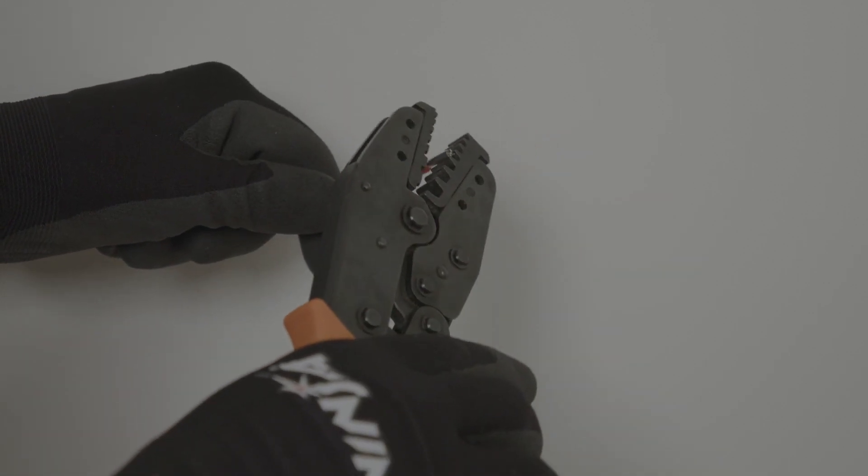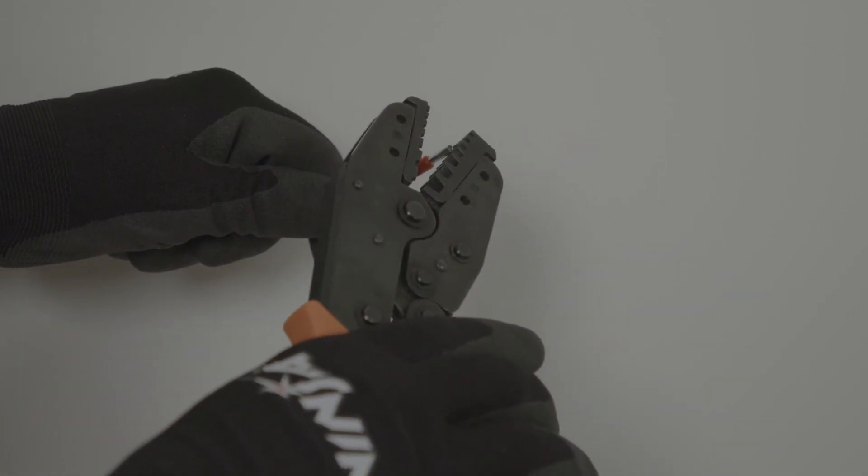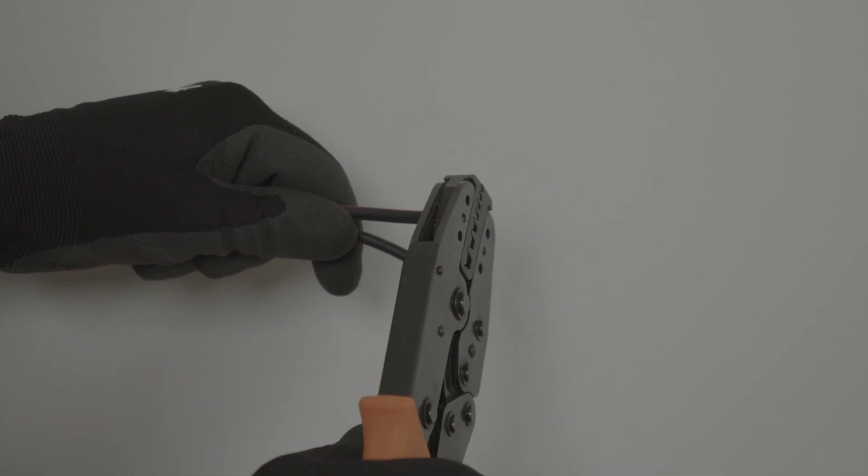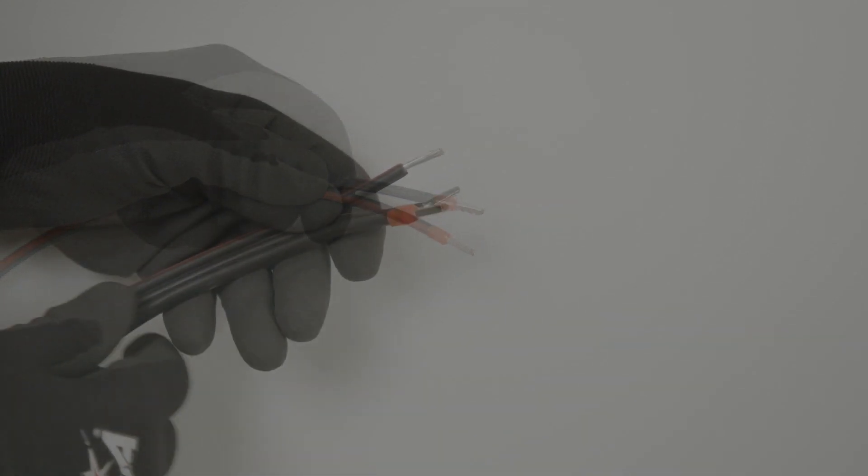For the DC, ensure that boot lace ferrules are always used to ensure good quality connection. If two into one connections are being used, from the battery and PV together, use a two into one boot lace ferrule.